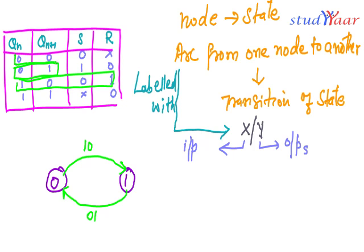We have other transitions also. 0 to 0, so I'm going to make an arc like this and my input is 0 x. And from 1 to 1, I'm going to make an arc like this and my input is x slash 0.